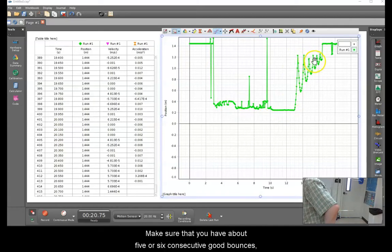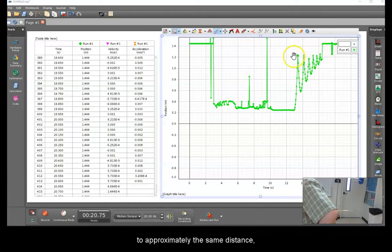Make sure that you have about five or six consecutive good bounces to approximately the same distance before the ball drifts out of the field of view.